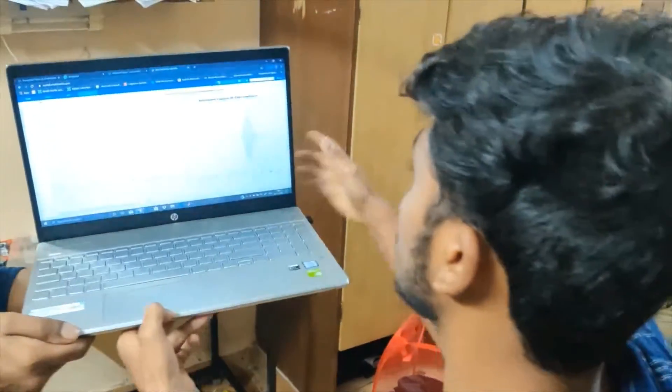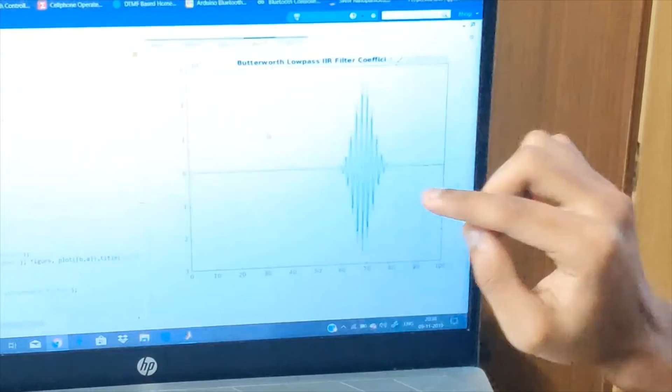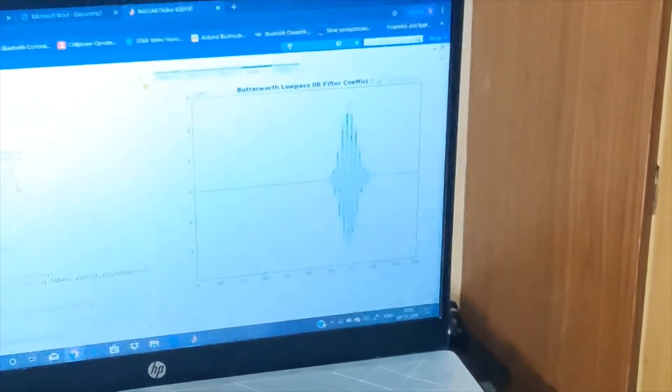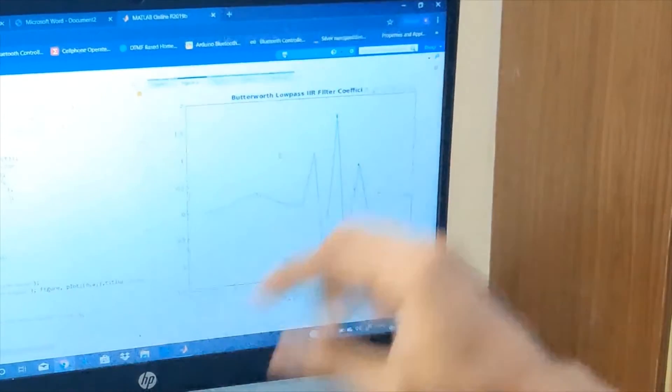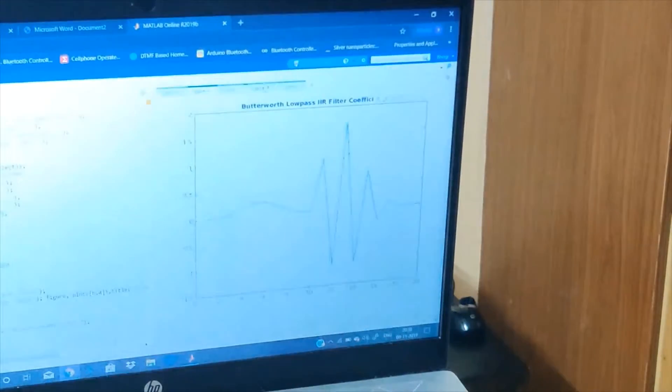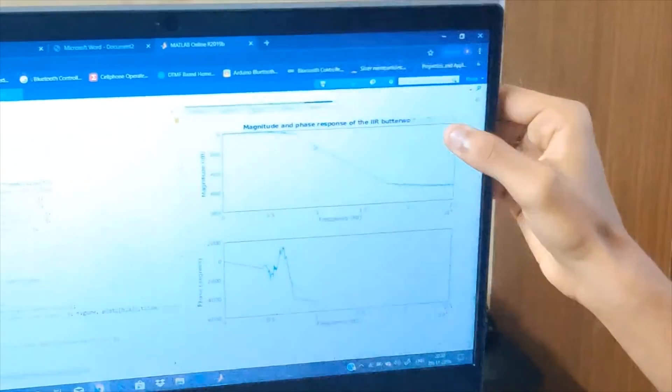Here we can observe the graphs. Here is the Butterworth low pass IIR filter coefficient for N equal to 49. We can compare this, we can compare the graphs here. See, it is more wide and here it is more narrow. And here is the graph for magnitude and phase response of IIR Butterworth filter.